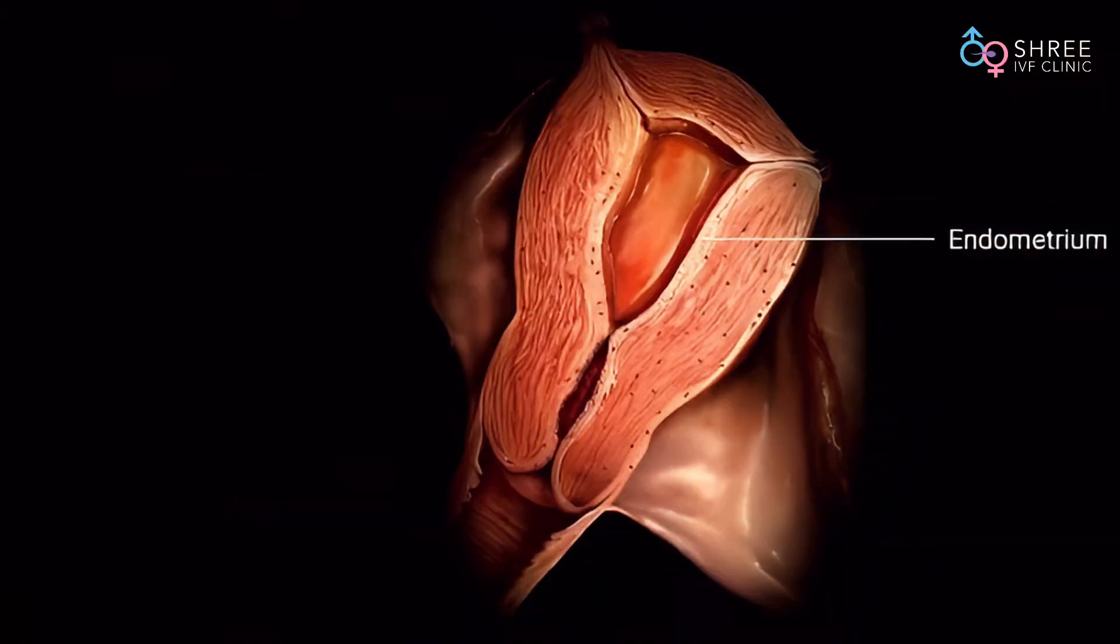Hi everyone, in today's class we will be discussing BCL-6, that is B-cell lymphoma type 6 marker, which is present in the endometrium.